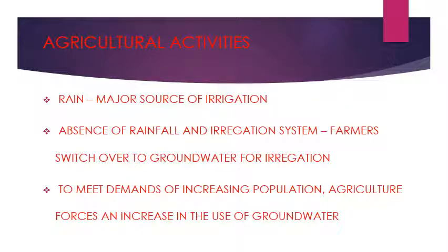Next is agricultural activities. In India, rains are the major source of irrigation. A few places have irrigation systems like canals, but due to irregular rainfall, even such irrigation systems suffer. In the absence of rainfall and irrigation systems, farmers have to switch over to groundwater for irrigation. To meet the demands of increasing population, agriculture forces an increase in the use of groundwater, which leads to decline in the level of water table.